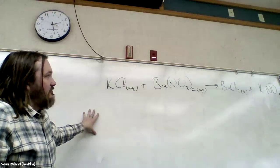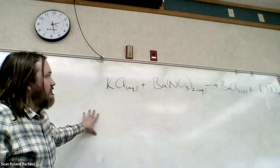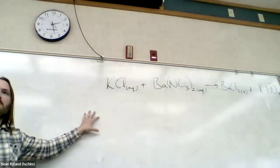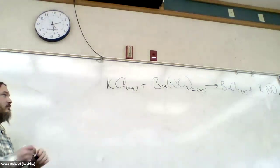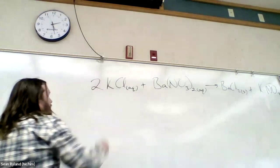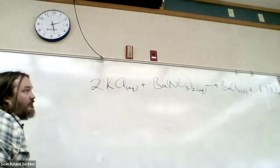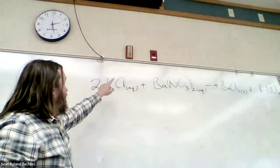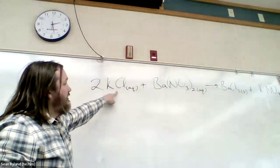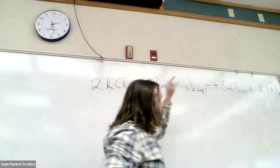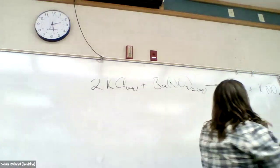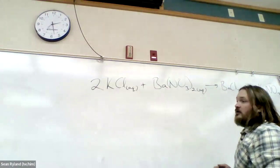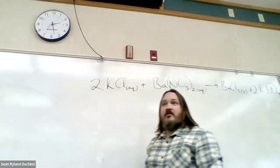Are we balanced? No — what do we need to do? Making barium chloride, which has two chlorides. So we need at least two chlorides, which means we need two potassiums, which means we're going to make at least two here, and that should take care of it.